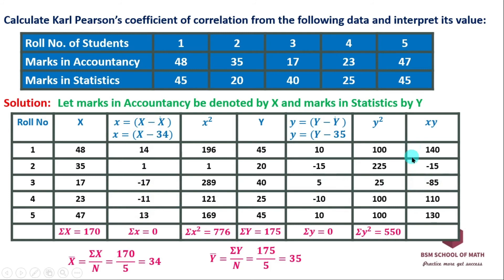We add up all the xy products. Adding the values — including 130, 110, and 140 — and combining them. The summation sigma xy is equal to 280.